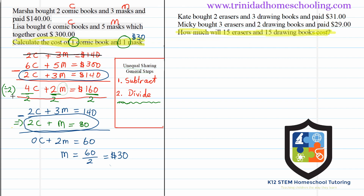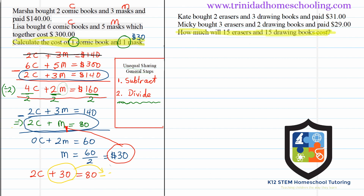Now we still need to find the cost of 1 comic book. We have three number statements — any one of them will work, but you have to substitute in the cost of the mask. Let's use the equation: 2 comic books plus 1 mask equals $80. Replacing the mask with its cost of $30: 2 comic books plus $30 equals $80.